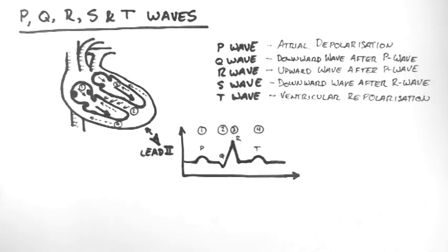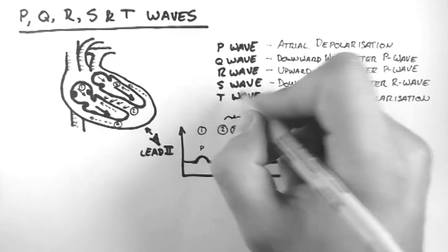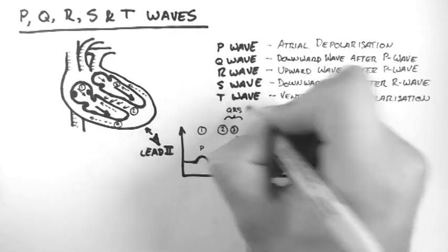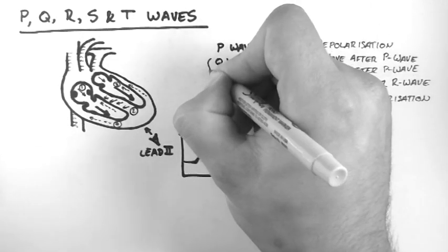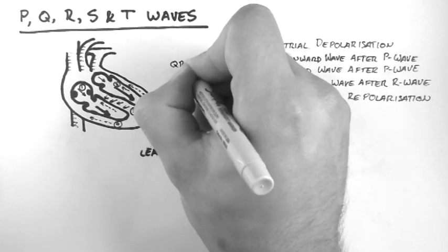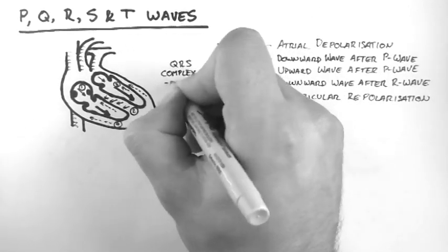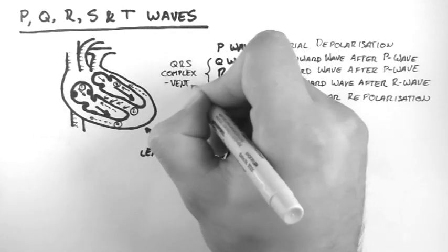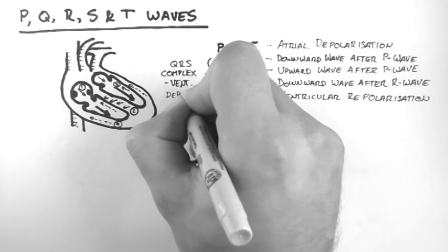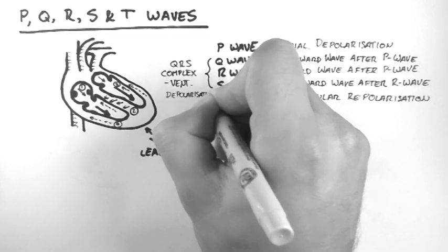Now because the Q, R and S waves are associated with ventricular depolarisation, we usually refer to them as the QRS complex, regardless of whether all three waves are present or not. So I'll just write down here, QRS complex ventricular depolarisation.